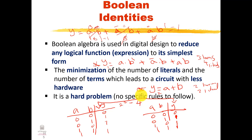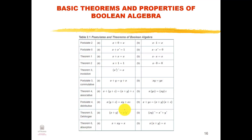If I am a designer and one person designed the circuit using Y1 and another used Y2, I would go with Y2 because it's cheaper. That's why we need to understand Boolean algebra. The problem is we need rules to follow. At your textbook page 47, we will go over the most common postulates and theorems for Boolean algebra.